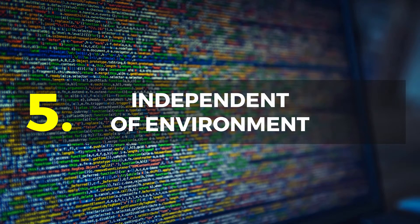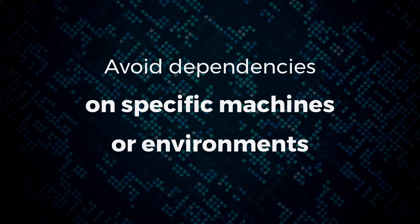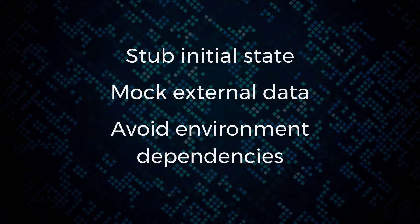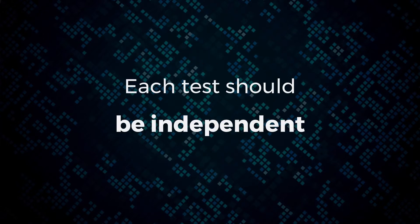Number five: make sure your tests are independent of your environment. Avoid dependencies on specific machines, environments, or environment variables. You want to avoid saying 'it works on my machine' when it fails on someone else's. Make sure it works on all developers' machines and on the continuous integration server. Stub your initial state, mock any external data, and avoid environment-specific config dependencies. Ensure that you don't have config you depend on for specific environments — stub that so tests rely on stub data regardless of where they run.